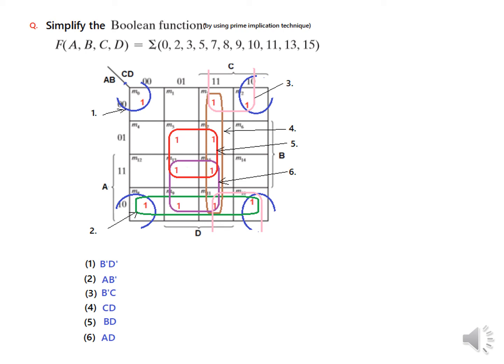Then we go for the essentials. This cell is covered by just one prime implicant, so it forms an essential — we write it as essential. Another cell is covered by two, so not essential. Another is also covered by two. But this one is only covered by one, so it is also essential — that is number five. Checking all remaining cells, they are all covered by two or more prime implicants. So only these two — number one and number five — are EPIs.